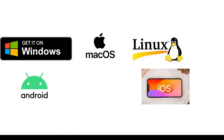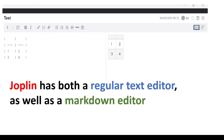Joplin is available on Windows, Mac OS, Linux, Android, and iOS. Joplin has both a regular text editor to the right as well as a markdown editor to the left.